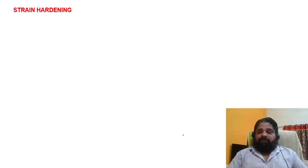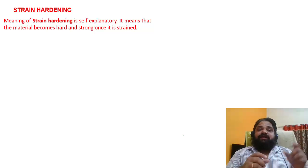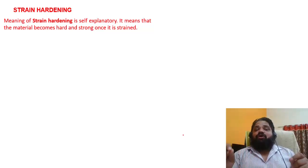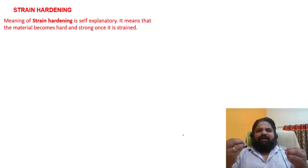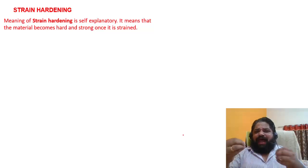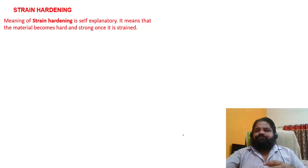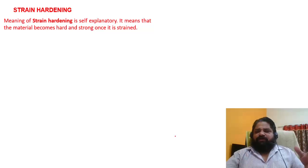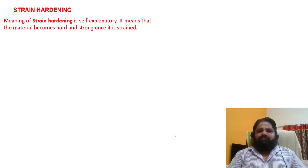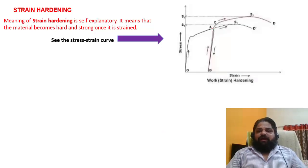Many people asked about strain hardening. The meaning is self-explanatory: strain hardening means the material becomes hard and strong once it is strained. To understand it more technically you need some knowledge of material science at the molecular level. Looking at the stress-strain curve: if after the elastic zone I unload, it comes down, then when reloaded the yield point has increased.